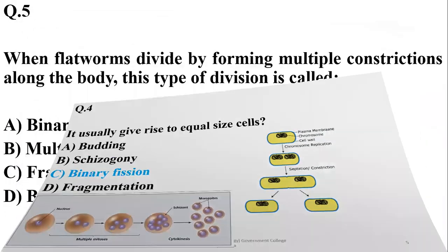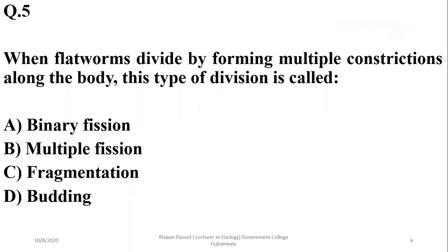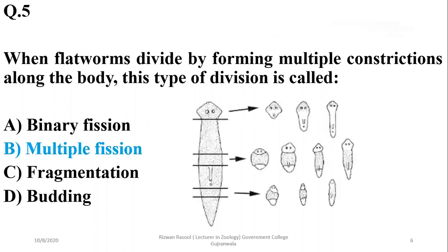Number five: when flatworms divide by forming multiple constrictions along the body, this type of division is called multiple fission. For example, in the case of planaria, when there are multiple points of breakage resulting in new planaria bodies, such type of fission or breakage is called multiple fission.